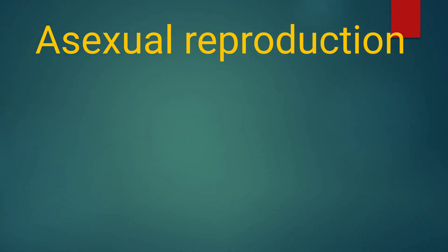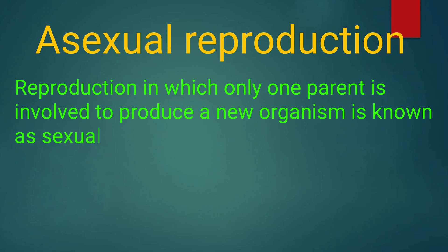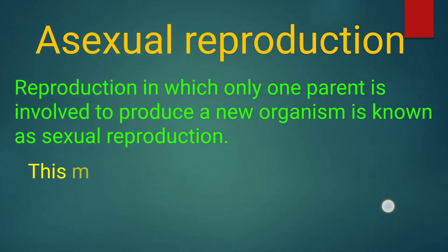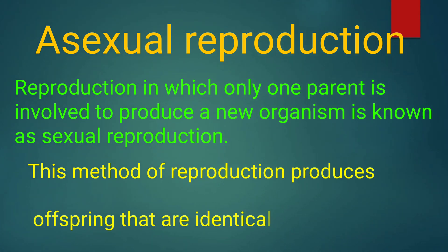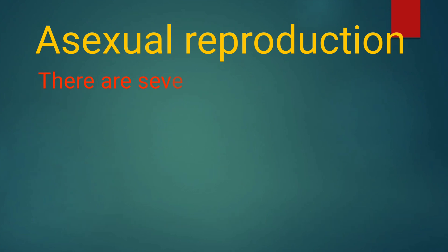Hello friends, welcome to my channel. In this video we discuss about asexual reproduction. The reproduction in which only one parent is involved to produce a new organism is known as asexual reproduction. This method of reproduction produces offspring that are identical to their parents. There are several methods of asexual reproduction in animals like